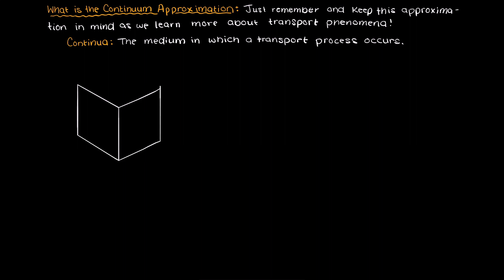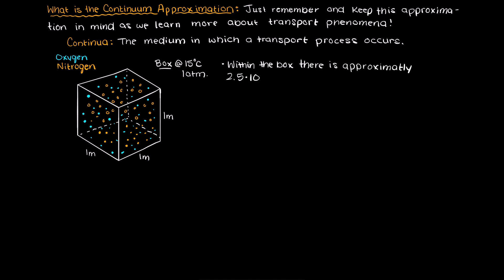Let's imagine we wanted to study a block of air at 15 degrees Celsius and one atmosphere in a box that is 1 meter cubed. Within this box there is an incredible amount of molecules, roughly 2.5 × 10^25.